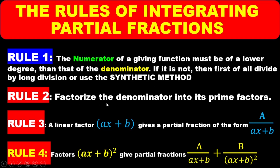Step two: factorize the denominator into its prime factors. You must always check the numerator and denominator — if the numerator has a lower degree than the denominator, go ahead and factorize the denominator. Rule three: a linear factor (ax plus b) gives a partial fraction of the form A over (ax plus b). Rule four: a repeated factor (ax plus b) squared gives a partial fraction of the form A over (ax plus b) plus B over (ax plus b) squared.